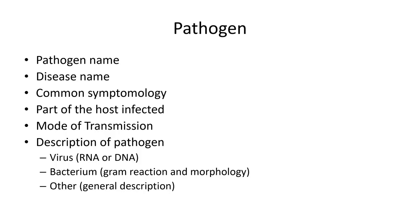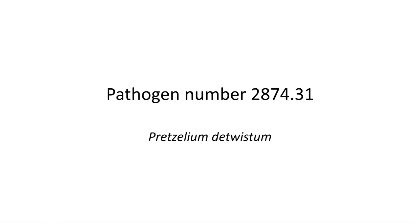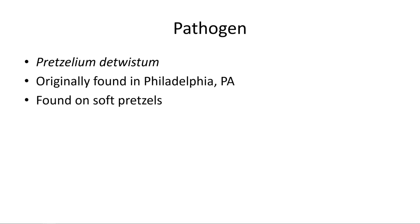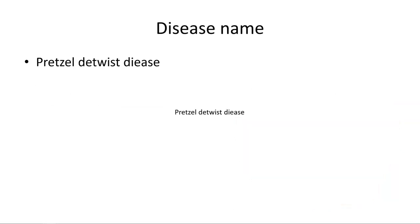Now I'm going to give you an example of one so you can see how long this is going to take — hopefully not very long. We are going to talk about pathogen number 2074.31, which is called Pretzillium detwistum. A little bit of history: it was originally found in Philadelphia and it occurs on soft pretzels. For those who do not come from the Philadelphia area, soft pretzels are very common up there, especially during the winter time when they tend to be warmed. This is called Pretzillium detwistum, or pretzel detwist disease.